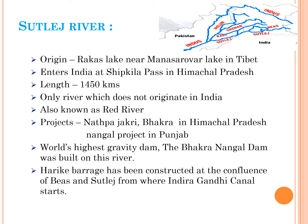The next left tributary of the Indus river is the Sutlej river. It originated in Rakas lake near Manasarovar lake in Tibet and enters India at Shipkila Pass in Himachal Pradesh. The total length of the Sutlej river is 1,450 kilometers, with 1,050 kilometers within Indian territory. It is a transboundary river and is sometimes known as the Red river. Important projects on the Sutlej river are Natpa Jhakri and Bakra in Himachal Pradesh, and the Nangal project in Punjab. The Sutlej river departs from Himachal Pradesh and enters the Punjab plains near Bakra, where the world's highest gravity dam, the Bakra Nangal dam, was built. The Harike Barrage has been constructed at the confluence of the Beas and Sutlej rivers, from where the Indira Gandhi Canal starts.